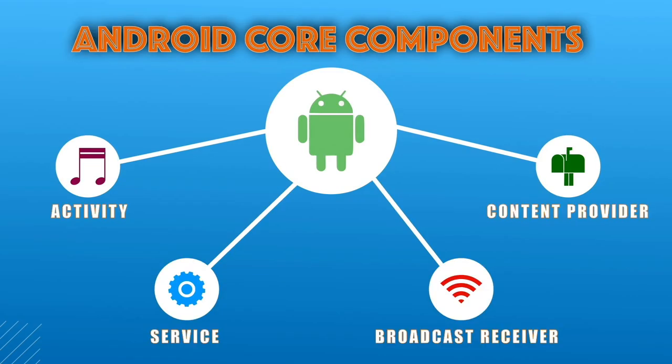These core components — Activities, Services, Broadcast Receivers, and Content Providers — work together to create a robust and functional Android app. Activities provide the visual interface and user interaction, while Services handle background tasks. Broadcast Receivers keep the app informed about external changes, and Content Providers enable secure data exchange. It's a beautiful collaboration. By understanding these core components, you've laid the groundwork for building your own Android apps.